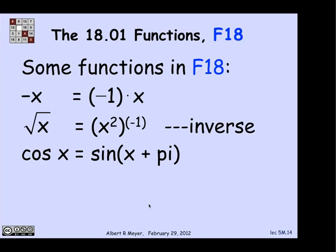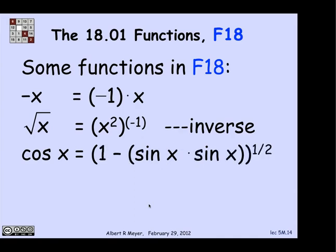Now, this was actually pointed out to me by students, this simple way of getting cosine x. The original way that I thought when I was using that square root operation, where I was going to use the identity that cosine squared plus sine squared is equal to 1. So if I take 1 minus sine squared and then take the square root, that's another way to get cosine x, the point being that there's a lot of ways to derive the same function as being in F18 built up from the operations applied to other functions.